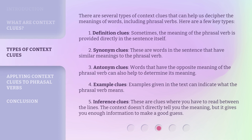There are several types of context clues that can help us decipher the meanings of words, including phrasal verbs. Here are a few key types. 1. Definition clues — sometimes the meaning of the phrasal verb is provided directly in the sentence itself. 2. Synonym clues — these are words in the sentence that have similar meanings to the phrasal verb. 3. Antonym clues — words that have the opposite meaning of the phrasal verb can also help to determine its meaning.